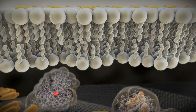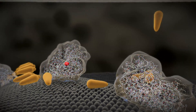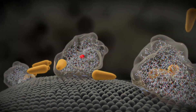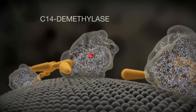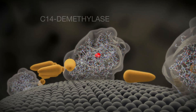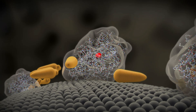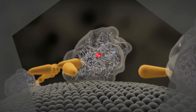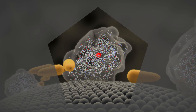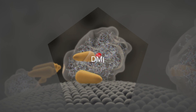These ergosterol components are indispensable for the intact structure of the membrane. They are produced inside the fungal cell. Several enzymes are involved in this production process. One of them, C14-demethylase, plays a vital role. This key enzyme, which ensures the stability of fungal cells, is an important target for fungicides — known as demethylase inhibitors, or DMIs.